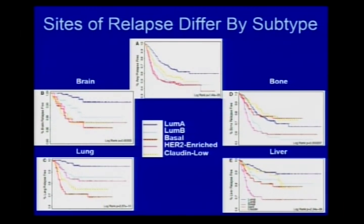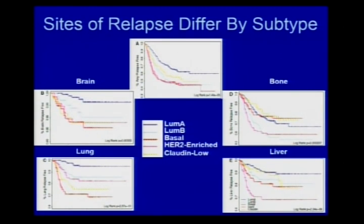Brain metastases are much more prominent in HER2-positive and triple negative breast cancer. Bone relapse is much more prominent in hormone receptor-positive breast cancer. We don't fully understand this, but it is consistent — it is something about the tumor and the microenvironment. It's the seed and the soil. There are immune-directed treatments and other therapies focused around getting the host stronger to fight off the cancer. We already have drugs that affect the microenvironment, like Zometa and Xgeva, making it more hostile to the cancer.